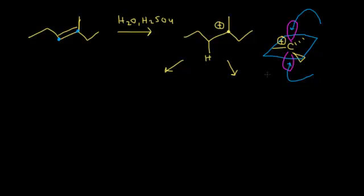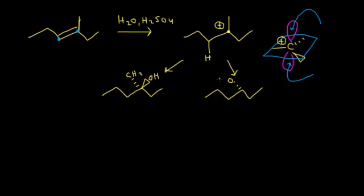Considering the two possible products: the OH could have added from one face, pushing the methyl group away, or it could add from the opposite side, pushing the methyl group out the other way. These are chirality centers, so we get enantiomers — a 50/50 racemic mixture as our products. The OH adds in a Markovnikov fashion, on the side that gives the most stable carbocation.